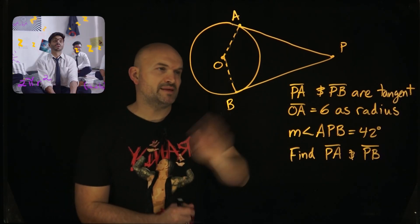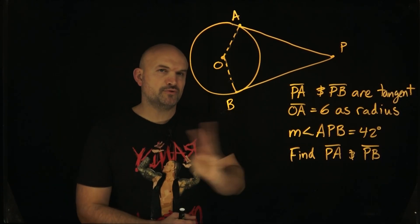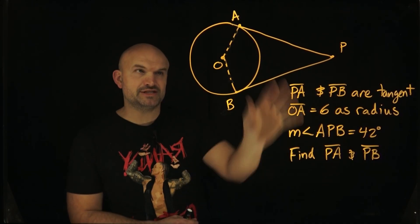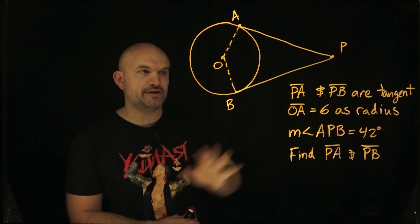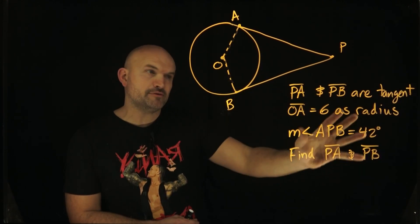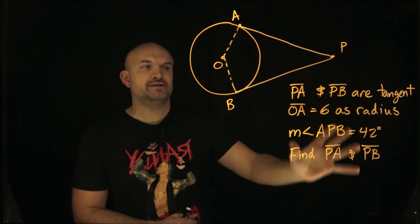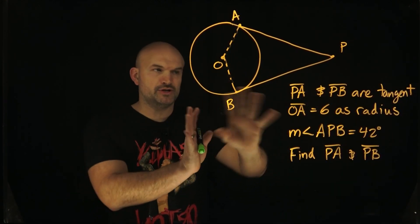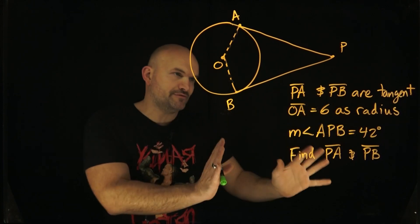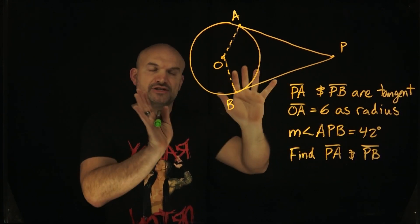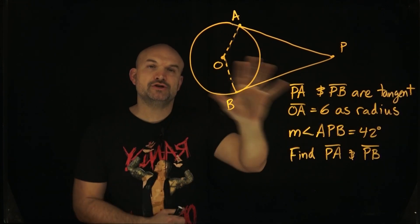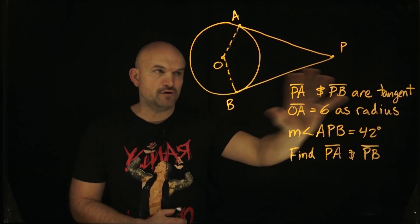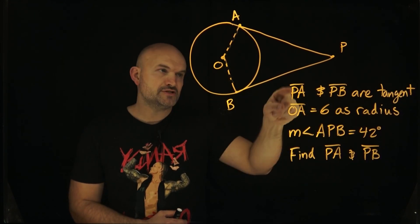Students get confused on a problem like this because they don't do three things very well. The first thing is to label their diagram based on the information that you are given. When you're given all this written information, make sure you apply it to your diagram so you have a visual understanding of what it is saying.